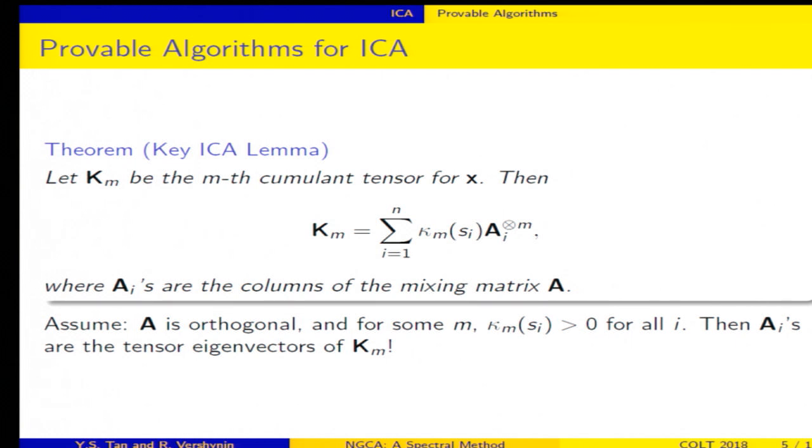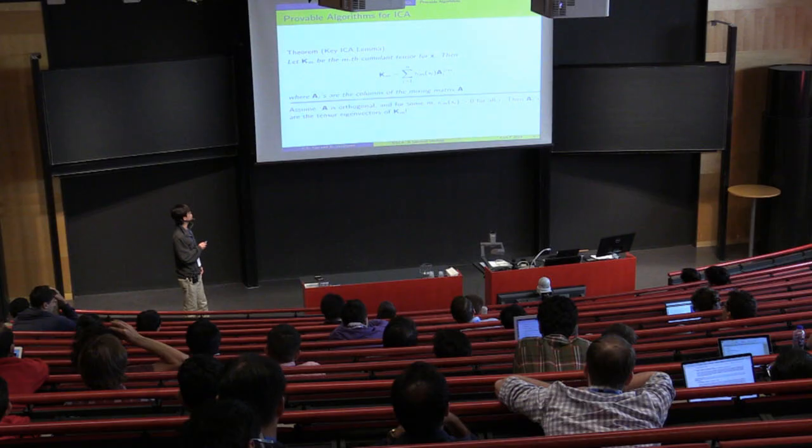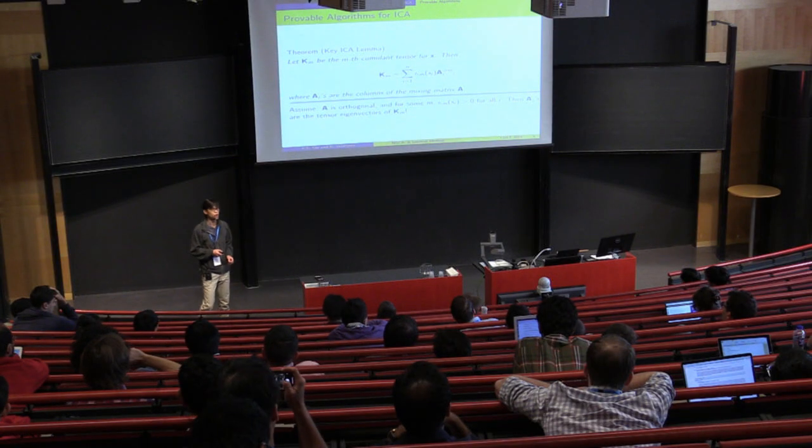So I let KM denote the M-th cumulant tensor of X, and I let the AIs denote the columns of the mixing matrix. Alright, so with this notation, I can write KM as the sum of M terms, and each term is the M-th outer product of the AI multiplied by the M-th cumulant of SI.